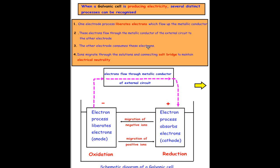The other electrode consumes these electrons. That's where reduction is occurring. And the fourth important thing about it is that ions migrate through the solutions and the connecting salt bridge to maintain electrical neutrality.